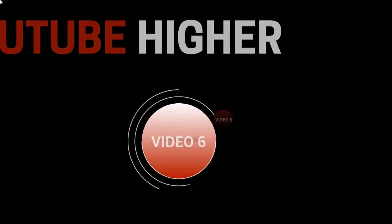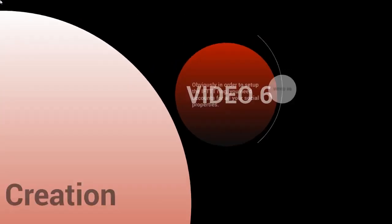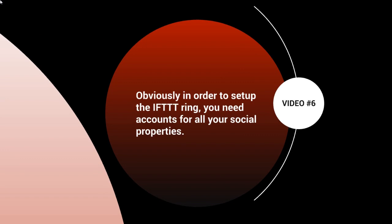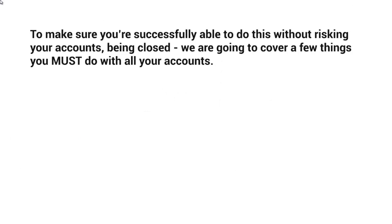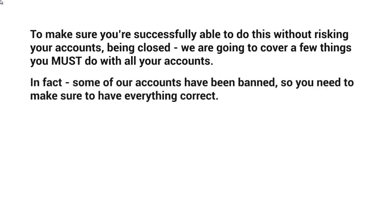Hello and welcome to video number six, and we're going to talk about account creation. In order to set up the IFTTT ring, you need to have accounts for all of your branded social properties — the username and password for Facebook, Twitter, and all the other social media properties. If you already have some, great, you don't have to create those. But for the ones you do not have, you want to be able to create those. While that does sound very simple, there are a few things you really need to focus on to make sure that you're successfully able to do this without risking your accounts being closed — and that does happen. Some of our accounts have been banned or closed by mistake because it has to be done a certain way.